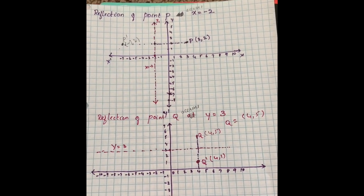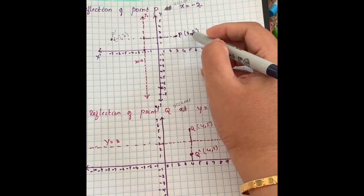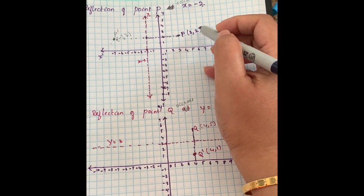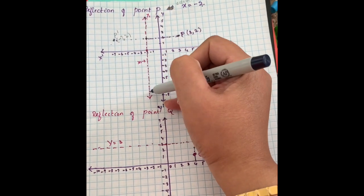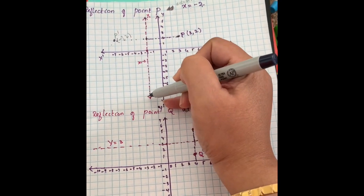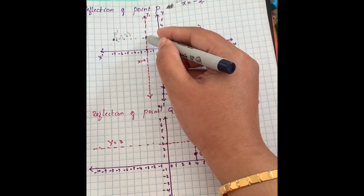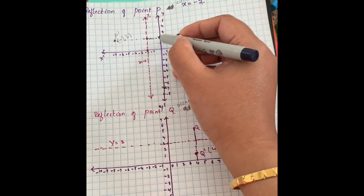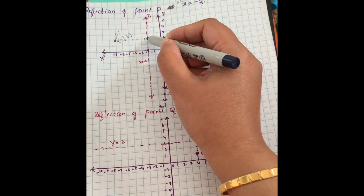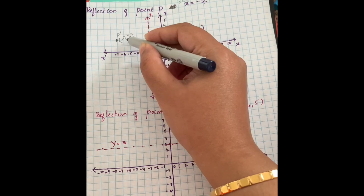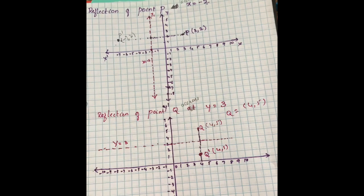Let us take an example: the reflection of point P across x equals -2. Point P is given as (3, 2). Draw a line parallel to the y-axis at x equals -2 and treat this as a new y-axis. Find the number of units from that line to P — that is five units. Move five units on the other side of the line and mark that as P prime. That is the reflection of point P across x equals -2.